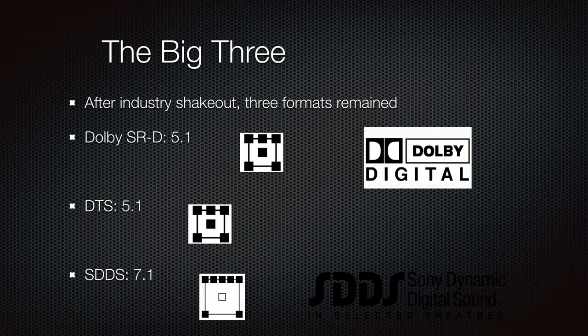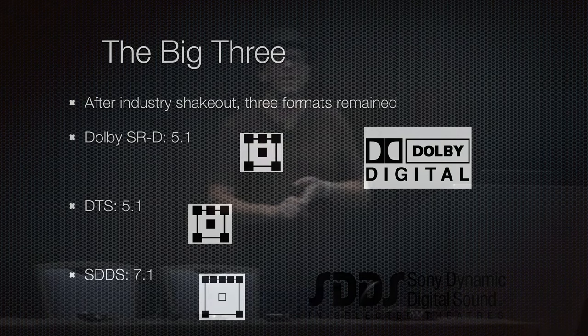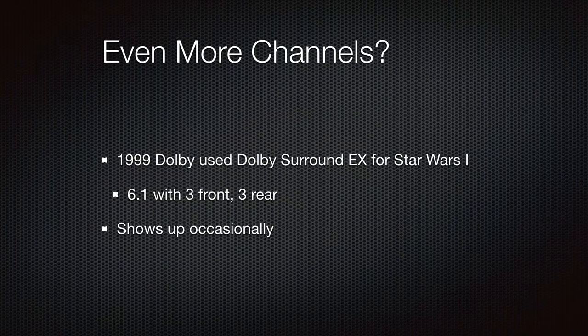The big three came out: Dolby SRD (Dolby Digital) at 5.1, DTS 5.1, and SDDS 7.1. SDDS only exists for cinema, but DTS and Dolby Digital are huge — Dolby Digital is required on DVDs and still used quite a bit today. Then Dolby started stuffing more channels in, doing Dolby Surround EX for Star Wars Episode I in 1999, which was a 6.1 — three front, three rear — though it shows up only occasionally now.